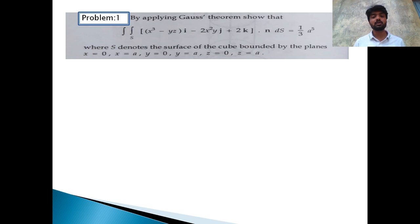By applying Gauss theorem, show that the surface integral over S of the vector R dot N into dS is equal to 1 by 3 times A to the power 5, where S denotes the surface of the cube bounded by the planes x equal to 0, x equal to A, y equal to 0, y equal to A, z equal to 0, and z equal to A.